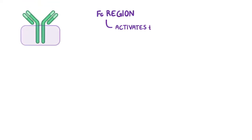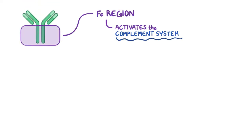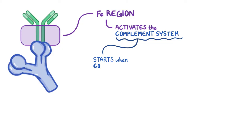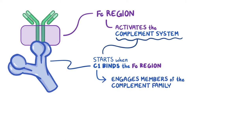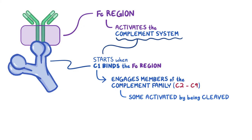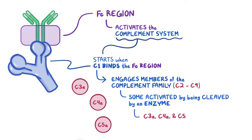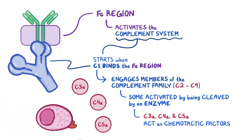The FC region activates the complement system. The process gets started when C1, the first of the complement proteins, binds to the FC region of the antibody. C1 then engages other members of the complement family, C2 through C9, some of which are activated by being cleaved or chopped by an enzyme. The cleaved fragments C3A, C4A, and C5A act as chemotactic factors, meaning they attract certain cells — in this case, mast cells.